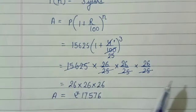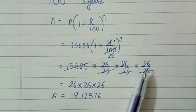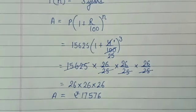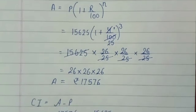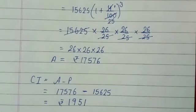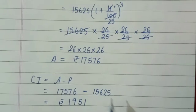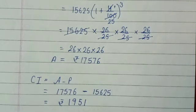15625 is directly 25 into 25 into 25, so we cancel it directly and multiply 26 into 26 into 26 to get 17576. This is our amount. Now compound interest equals amount minus principal, so our amount is 17576 and compound interest is rupees 1951.